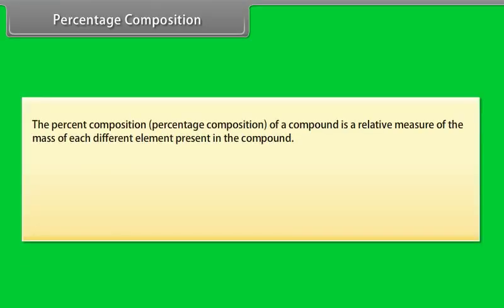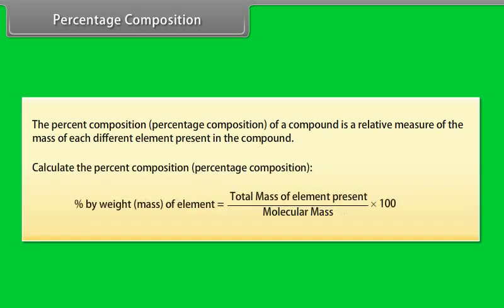Percentage Composition. The percent composition of a compound is a relative measure of the mass of each different element present in the compound. To calculate percent composition by weight: percentage composition = (mass of element present / molecular mass) × 100.